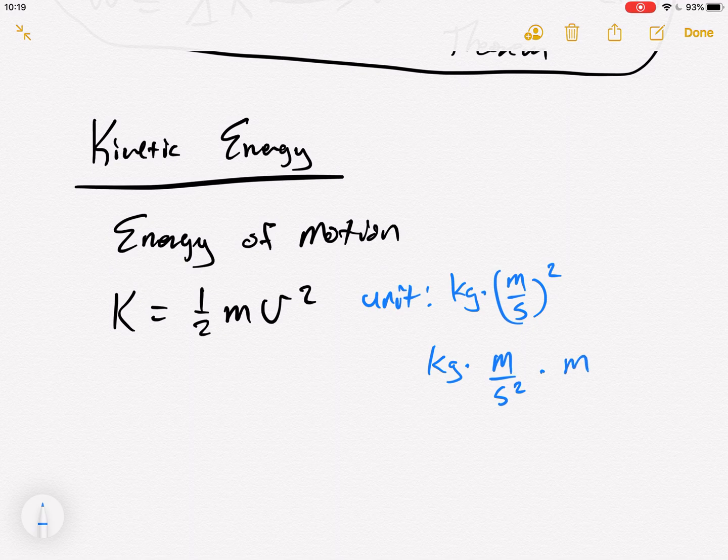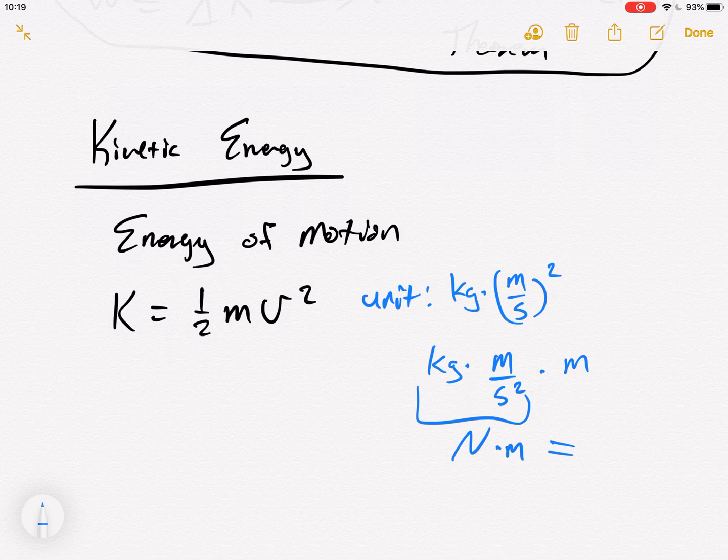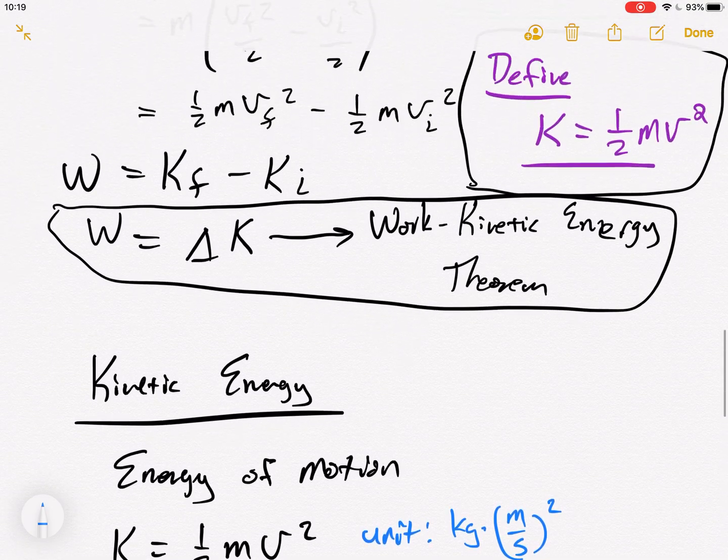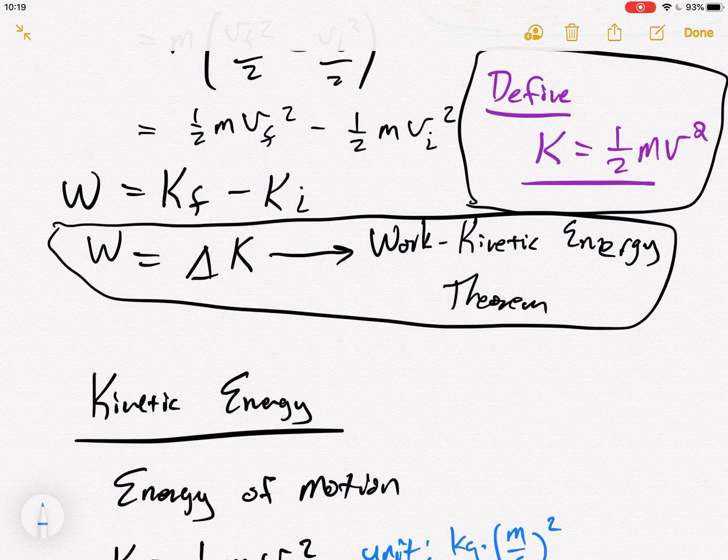But if you group kilogram meter per second squared times a meter. The kilogram is a mass. The meter per second squared is an acceleration. And a mass times an acceleration, m A, is force. That's a Newton. So a Newton times a meter here. We've already defined that as a joule. So the unit for kinetic energy is a joule, just like we expected. If we're setting delta k equal to work, they need to have the same unit.